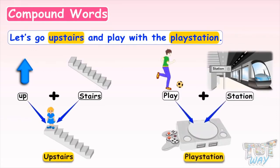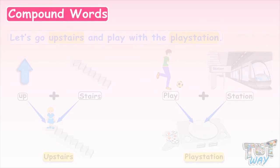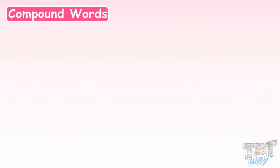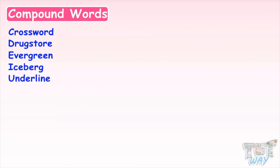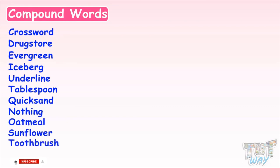So kids, there are just so many compound words in English. Let's have a look at some of the commonly used compound words. Crossword, drugstore, evergreen, iceberg, underline, tablespoon, quicksand, nothing, oatmeal, sunflower, toothbrush, fingernail, rainbow, goldfish, cowboy.